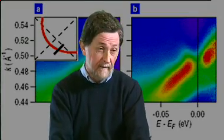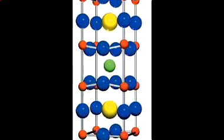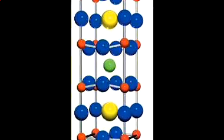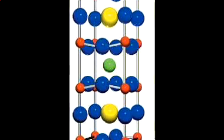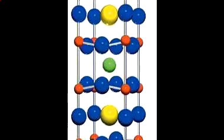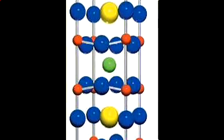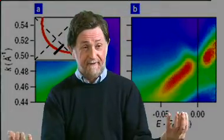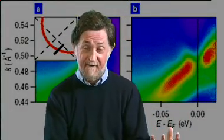In a traditional superconductor, the electrons pair and then the whole material becomes superconducting at the same time. Technically we refer to that as establishing long-range phase coherence.